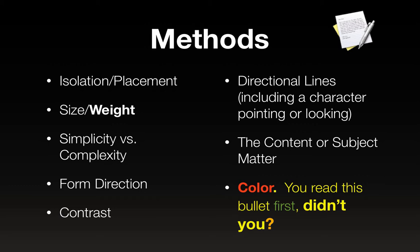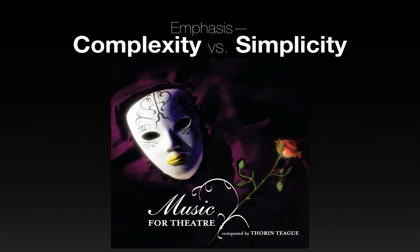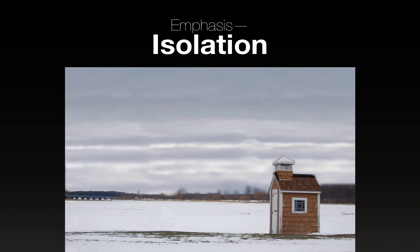You read that bullet first, didn't you? Maybe you did, maybe you didn't. So, complexity versus simplicity — let's just go through a couple of visual examples here. You can see the ideas, you can see kind of where the eye is intended to go. Also the lighting and a number of other factors are contributing to where your eye is supposed to be on this one. Isolation — pretty clear example, pretty good idea of where the focal point is on this one.